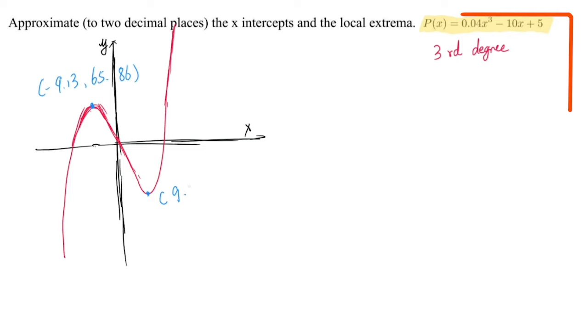Okay, these two are the extrema. And next we find the x-intercepts. There are three intercepts, so the maximum number of x-intercepts a third degree polynomial can get is three.